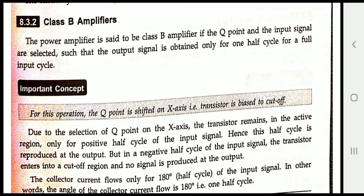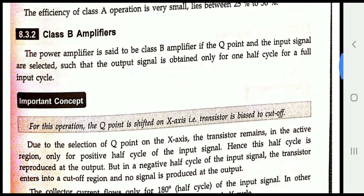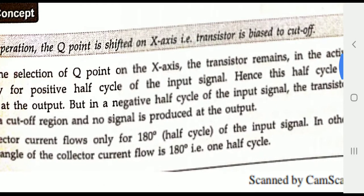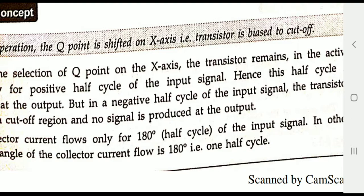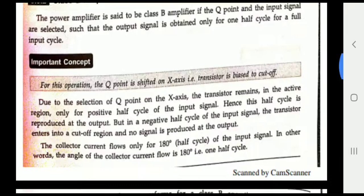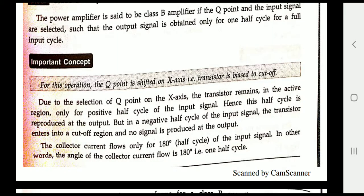In Class B amplifier, we want to improve the efficiency. The power amplifier is said to be a Class B amplifier if the Q point and the input are selected in such a way that the output signal is obtained only for one half cycle of the full input cycle. This means only 180 degrees of the input cycle is used, and the Q point is shifted to the X axis — meaning the transistor is only biased to cutoff. It is on only when in the cutoff region; the remaining time it is off.